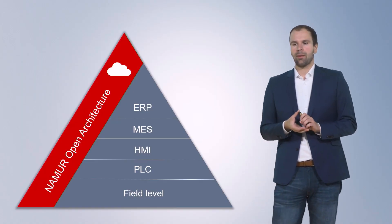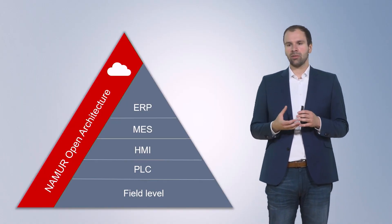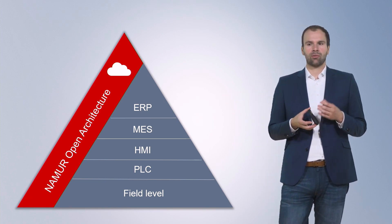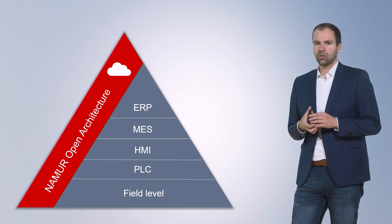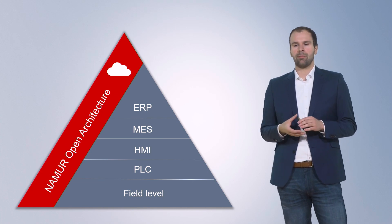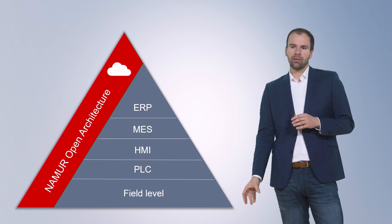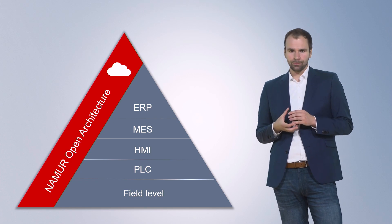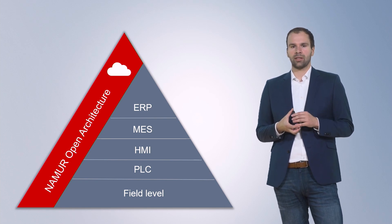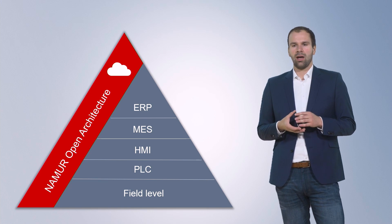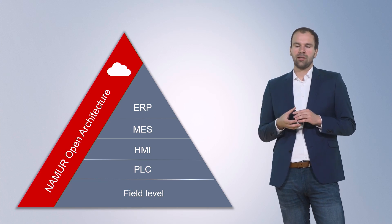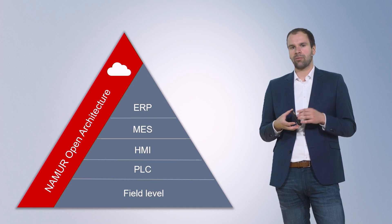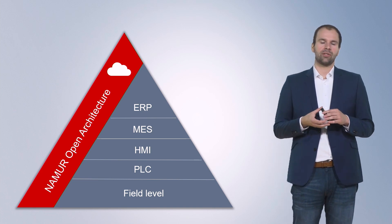So NOA came up with the concept of a second channel — the NOA side channel — which spreads across all the different layers of the automation pyramid, enabling communication from the field level all the way up to all other systems in the automation architecture. Because it bypasses all the other layers, it is independent from them and therefore does not affect existing automation systems.